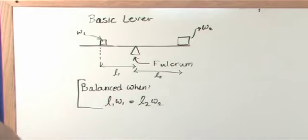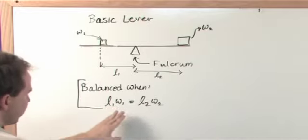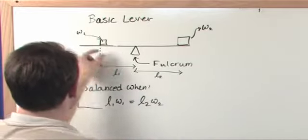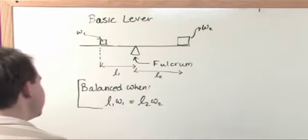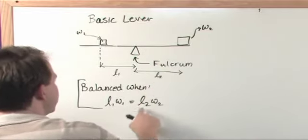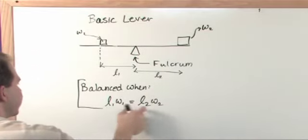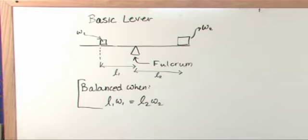So what this is saying is that when the product or the multiplication of the distance times the weight on the left is equal to the distance times the weight on the right, if these two products are equal to each other, then the seesaw is balanced.